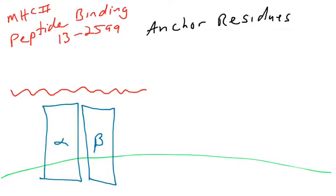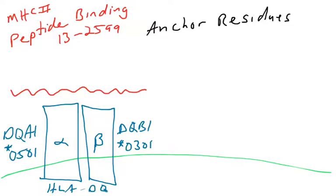What about anchor residues? Are there specific amino acids that are located in certain areas of the peptide that are held by the alpha and the beta chains of MHC class II? Well, yes and no.